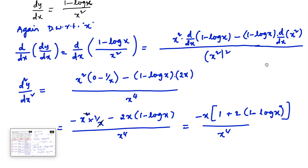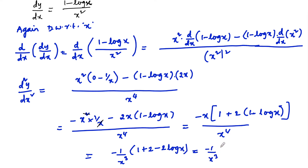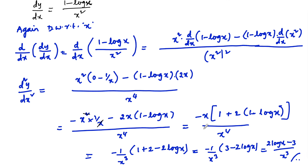On simplifying we can write minus 1 by x power 3 into 1 plus 2 minus 2 log x, so we can write minus 1 by x power 3 of 3 minus 2 log x, or we can also write 2 log x minus 3 upon x power 3, which is the second order differentiation of log x upon x.